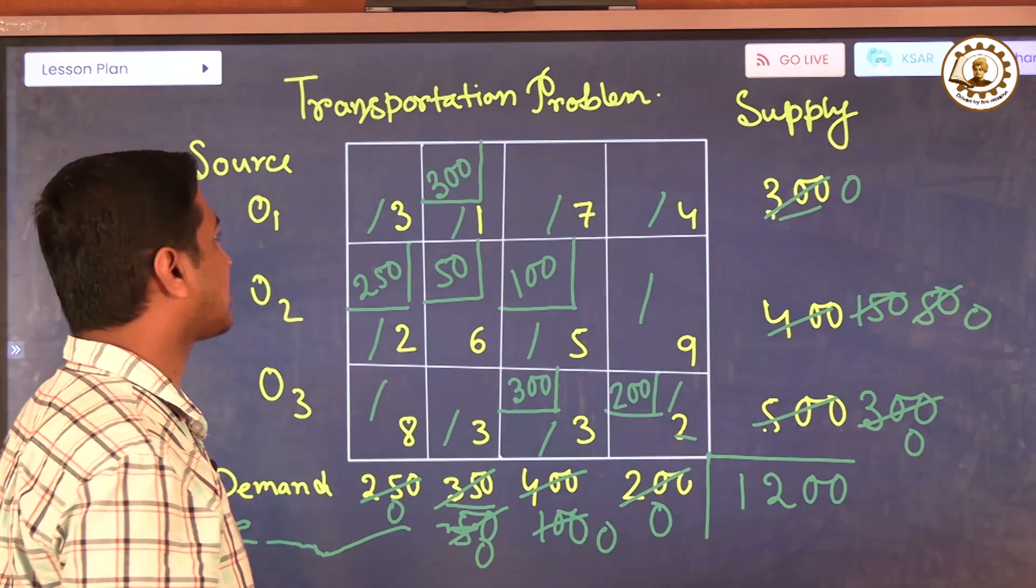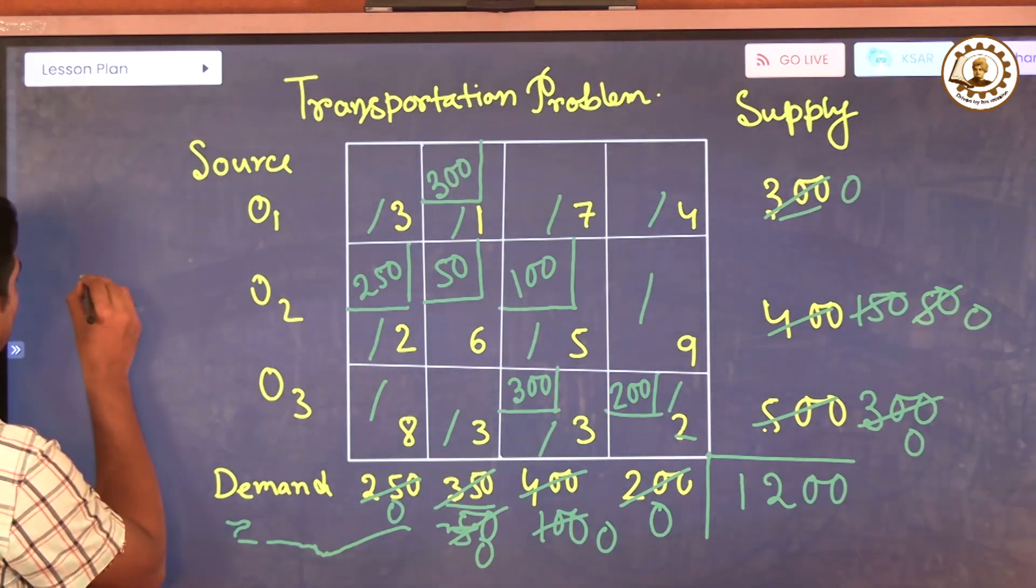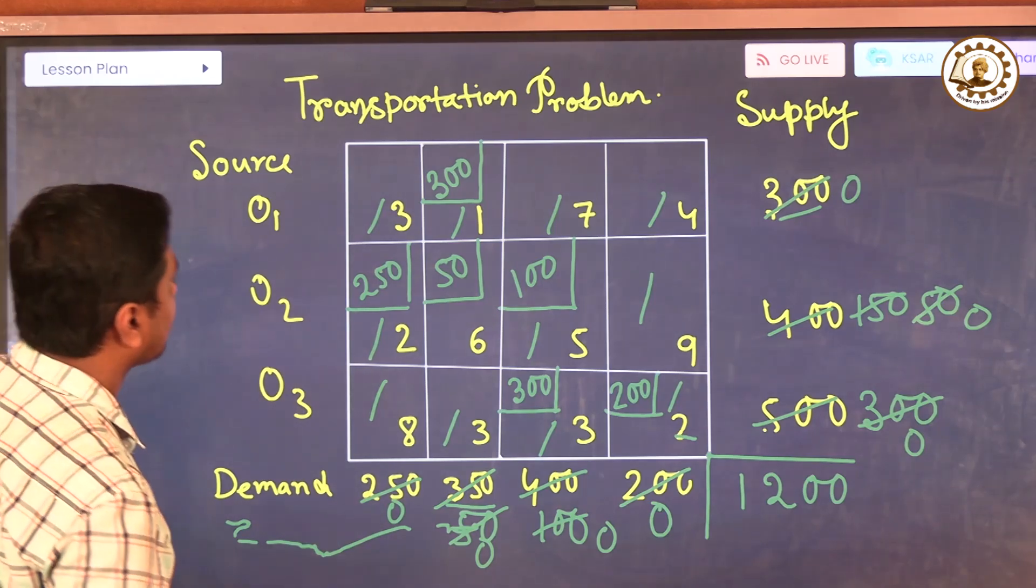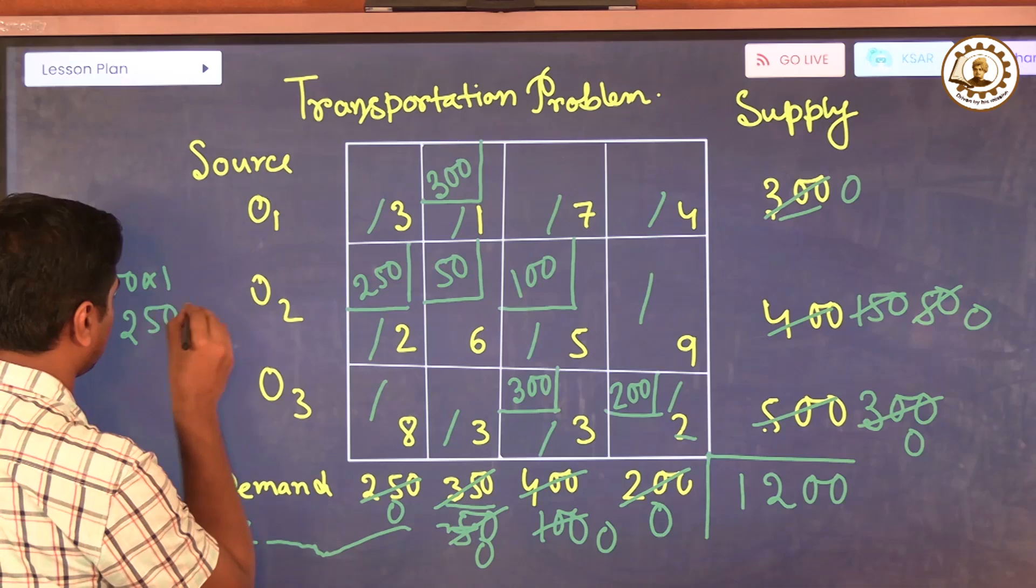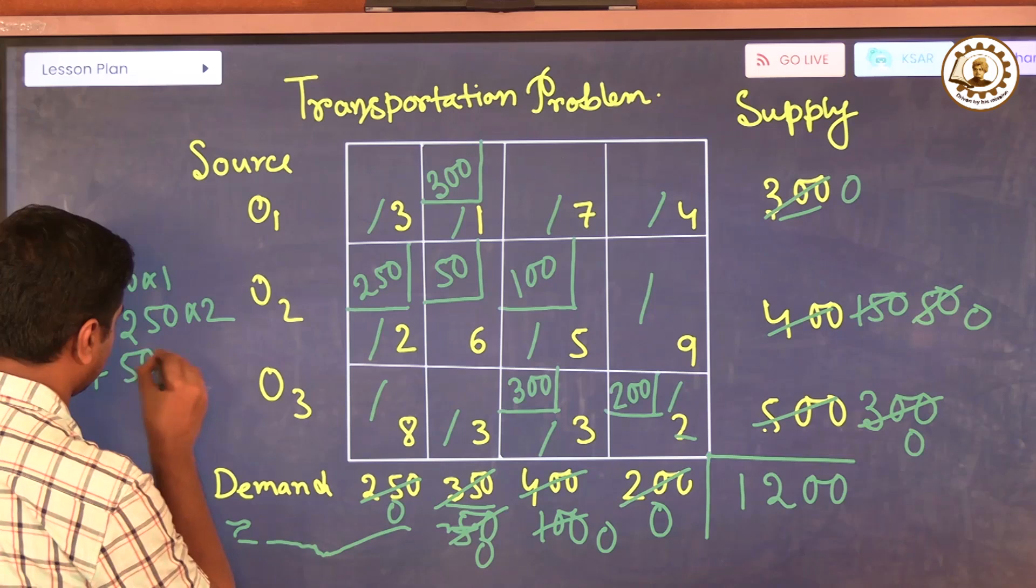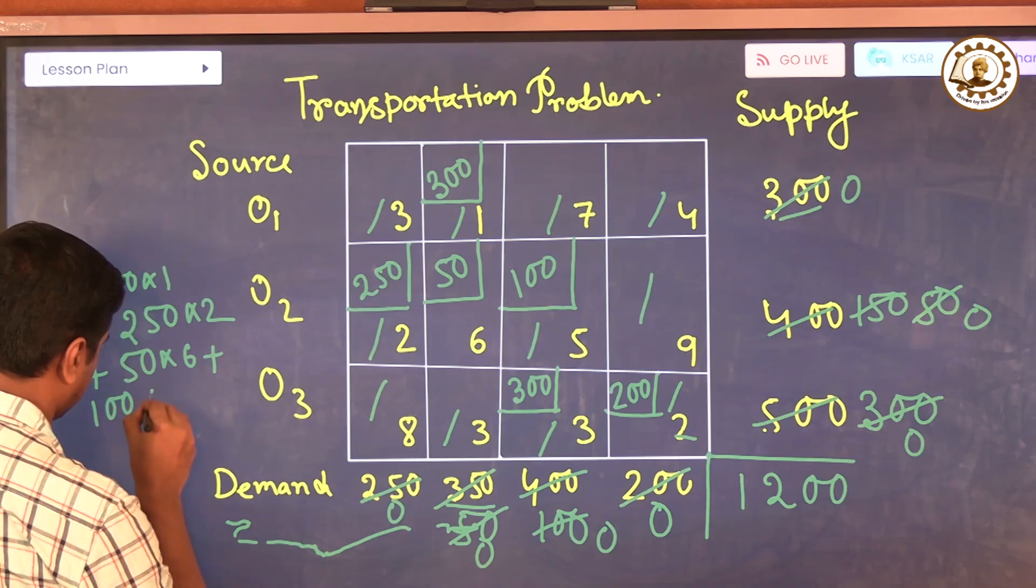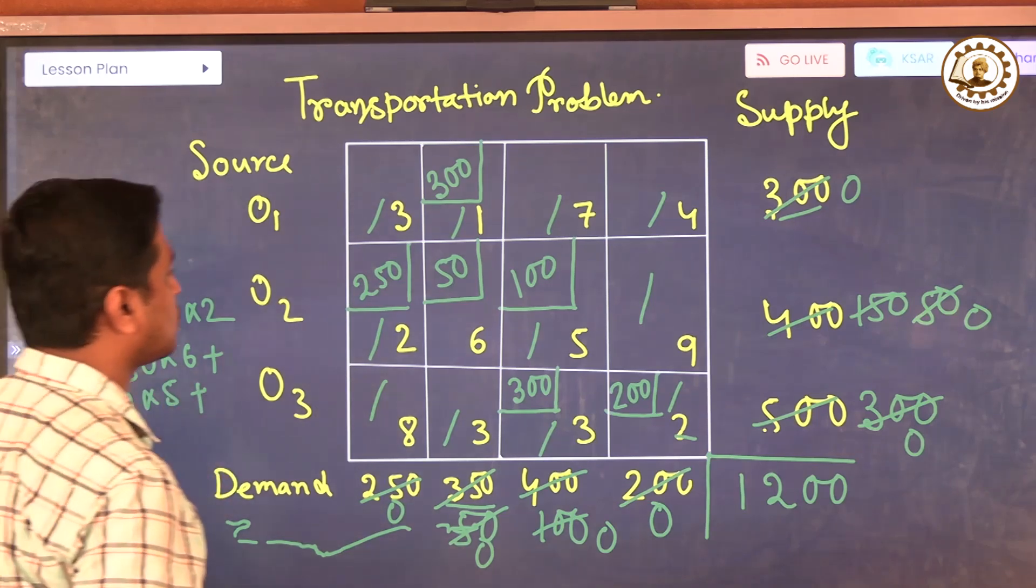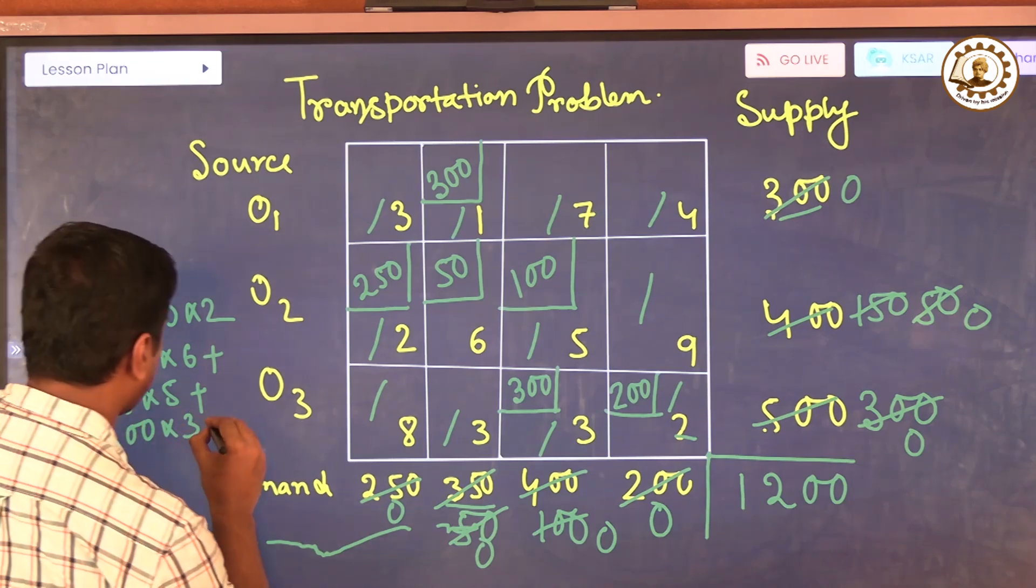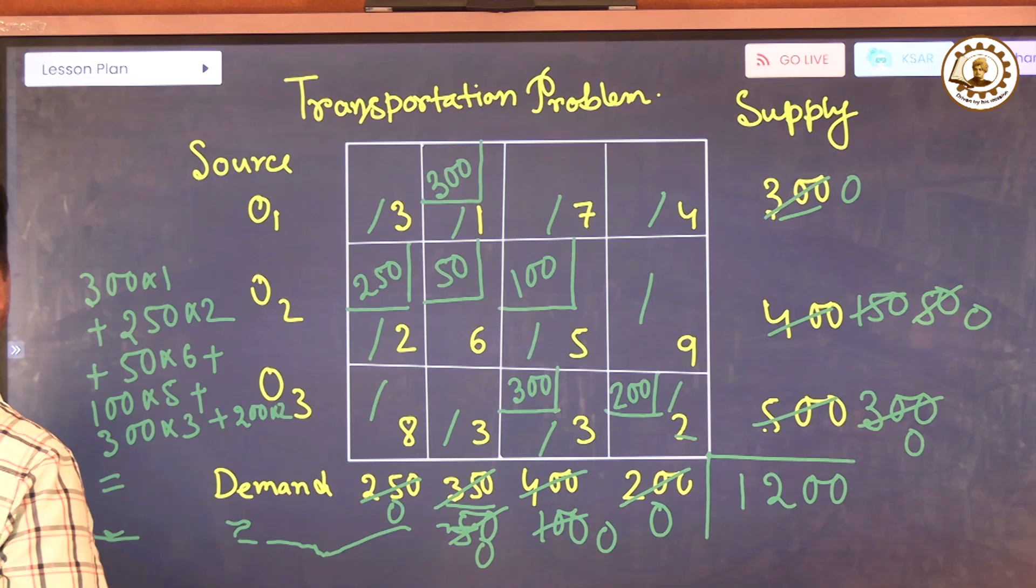Now the result is 300 into 1 plus 250 into 2 plus 50 into 6 plus 100 into 5 plus 300 into 3 plus 200 into 2. The result is 2900.